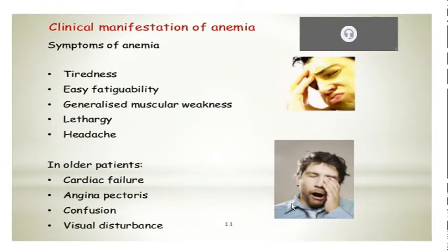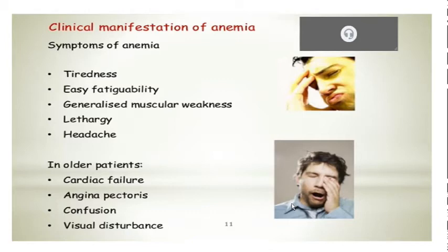The clinical manifestation of anemia — basically what anemia does is either a decrease in the RBCs or the decrease in the hemoglobin concentration, which leads to definitely decreased oxygen carrying capacity of the RBCs. As the oxygen capacity is decreased, that promotes diffuse hypoxia, and that leads to myriads of symptoms. Very commonly you have easy fatigability, generalized muscular weakness, and lethargy.